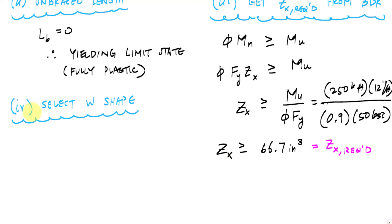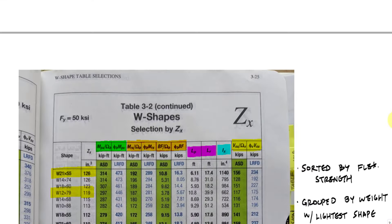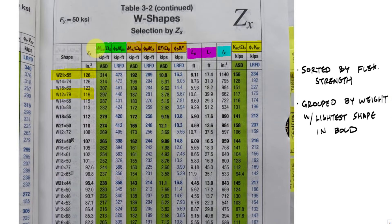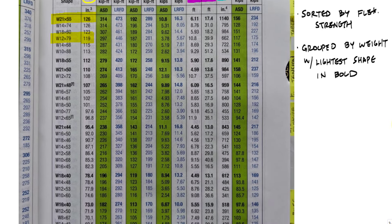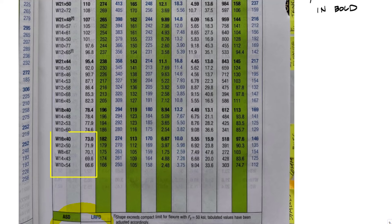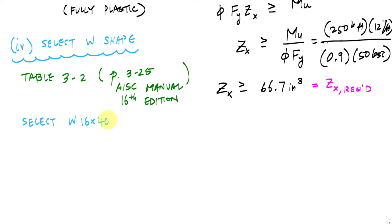Now I can select a trial shape. I'm going to use table 3-2 in the manual. In particular, page 3-25 in the 16th edition of the AISC manual. I'm going to look for 66.7 inches cubed. I have a column of plastic section moduli right here. When I go through that group, I'm looking for 66.7 or something near it. I see 66.6. But I'm going to go straight to that bolded line. Within that group, I have the largest plastic section modulus and the lightest section, this W16 by 40. I'm trying to choose an economical shape here. I'm going to go with the W16 by 40 from table 3-2.